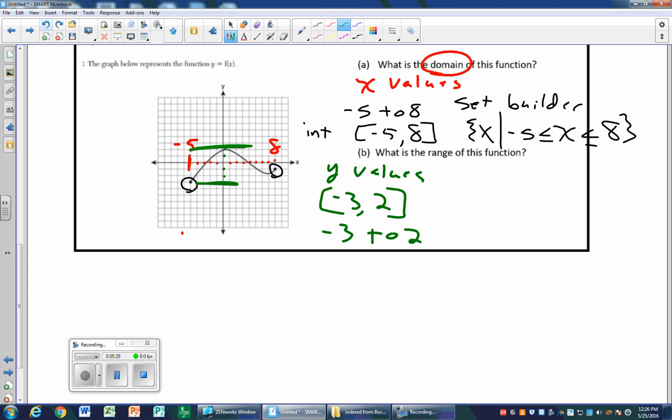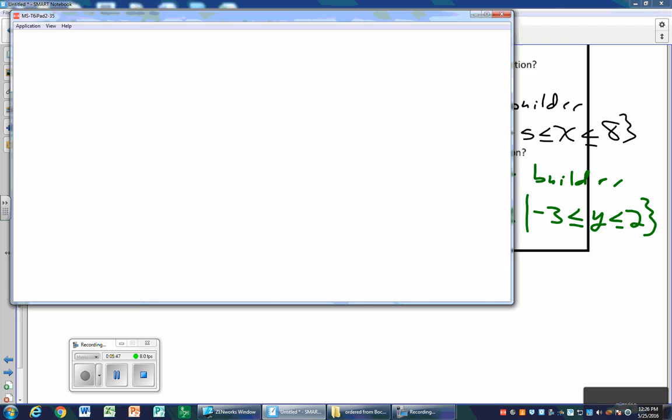We can also write it as negative 3 to 2. And in set builder notation, all numbers y such that y is still in between. So negative 3 is less than or equal to y, which is less than or equal to 2. And close your set builder notation.